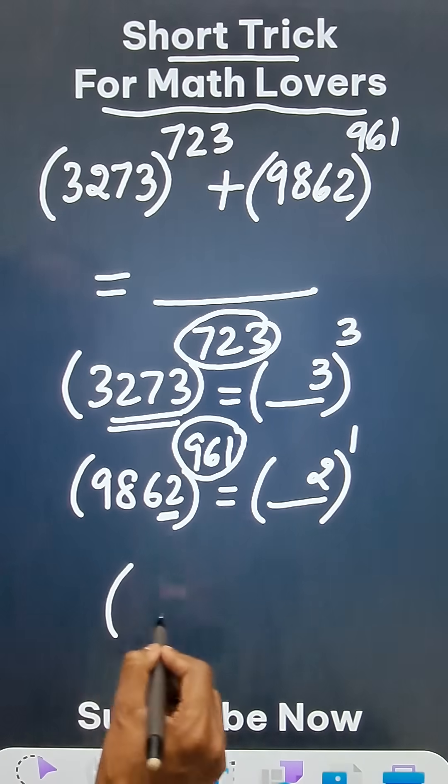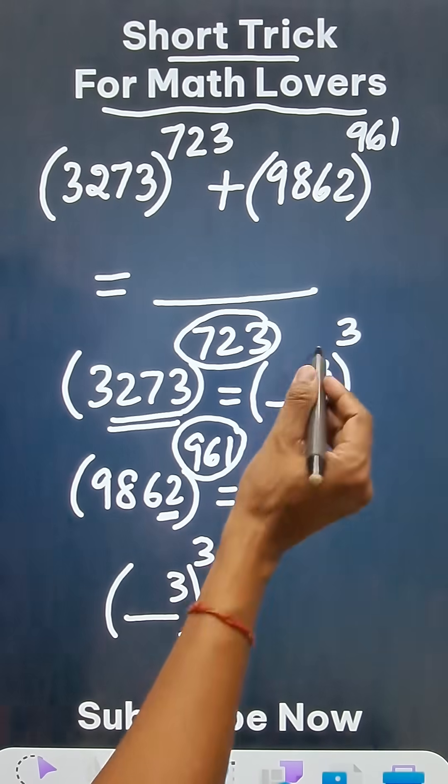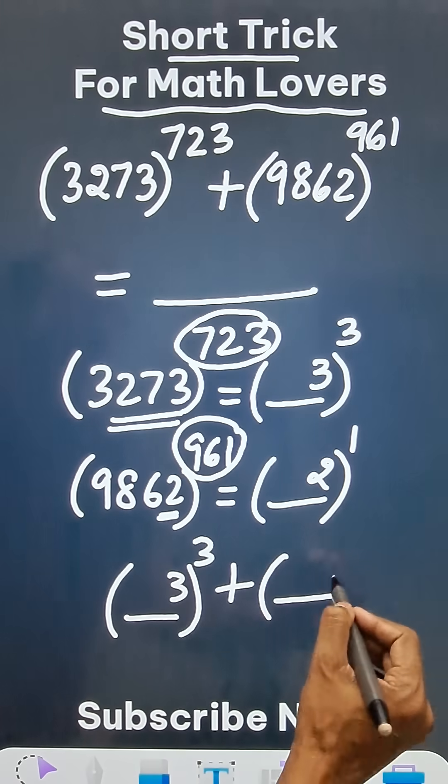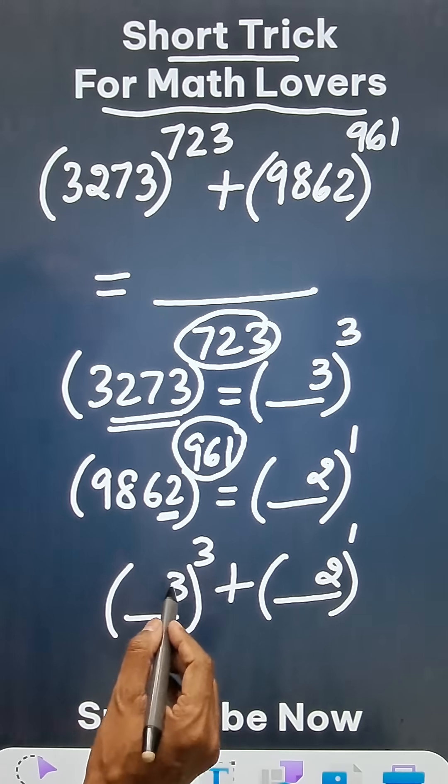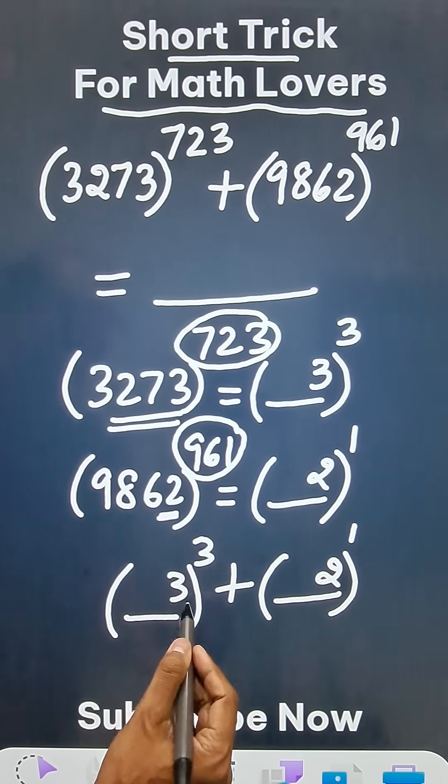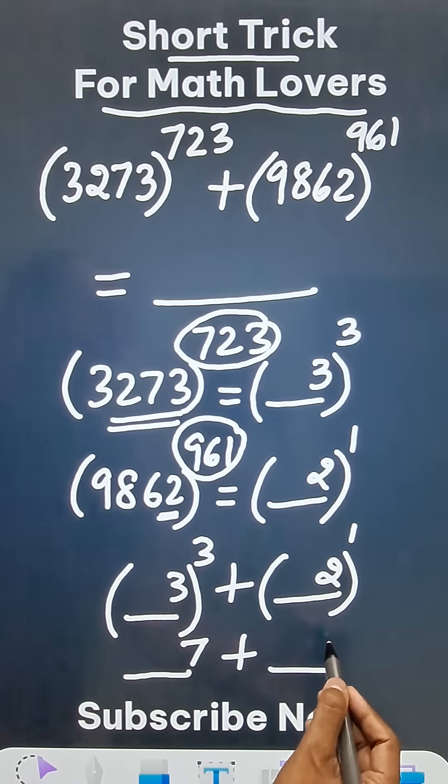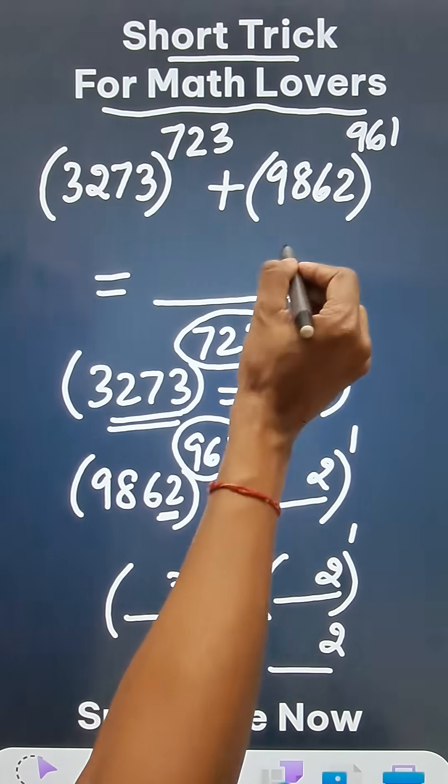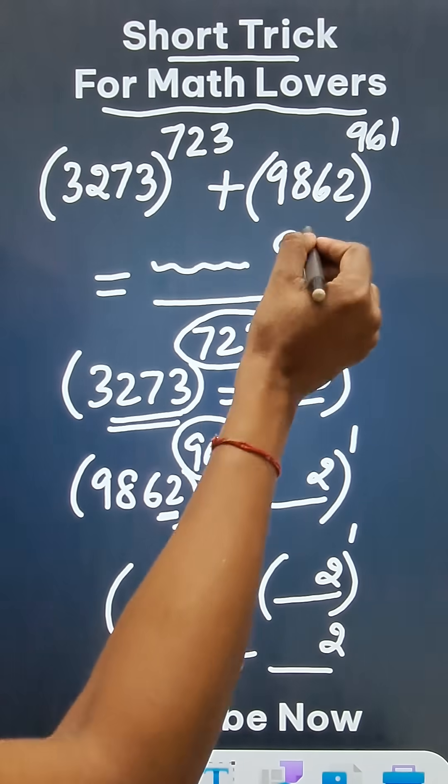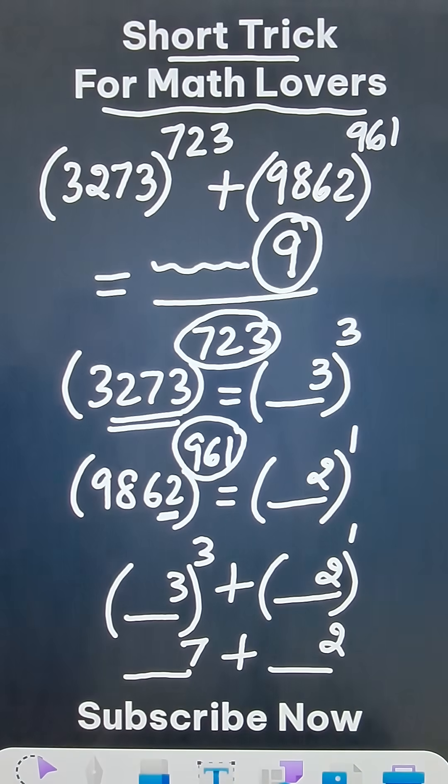So whenever the number ends in 3 and you are cubing it, and adding it to something ending in 2 to the power 1, this obviously will be 27, ending in 7. So this will end in 7, and 2 raised to power 1 ends in 2 itself. Therefore your answer will be 7 plus 2 equals 9. Whatever number lies here, the unit digit of this large expression is going to be 9.